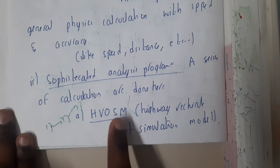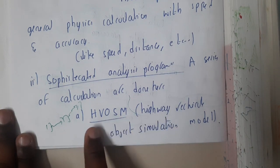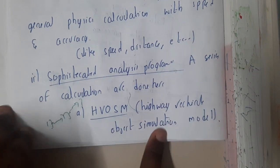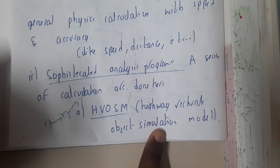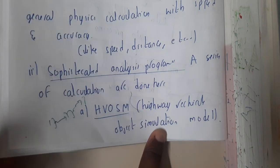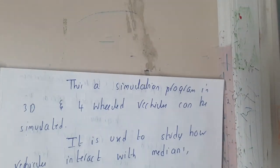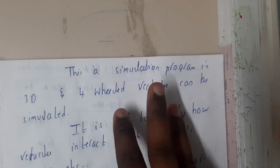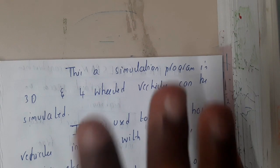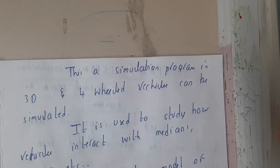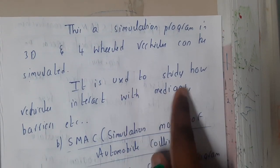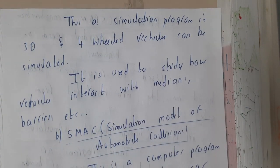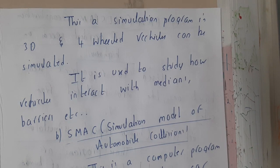One program is HVOSM — Highway Vehicle Object Simulation Model. This is a 3D simulation program for four-wheeled vehicles that can simulate various scenarios. It is specifically used to study how vehicles interact with medians and barriers on the road.